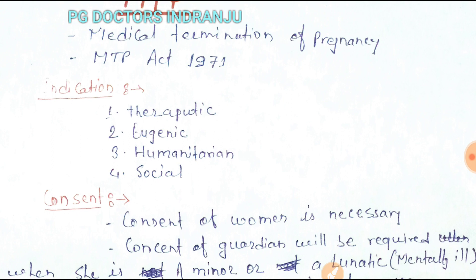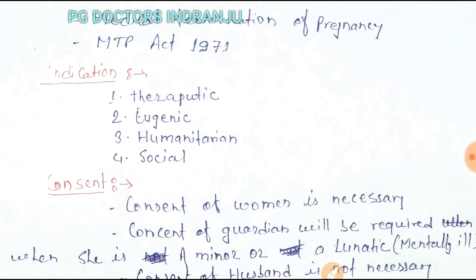What are the indications of MTP? They are therapeutic, eugenic, humanitarian, and social. The therapeutic indication applies when continuation of the pregnancy endangers the life of the woman or causes severe injury to her physical or mental health.